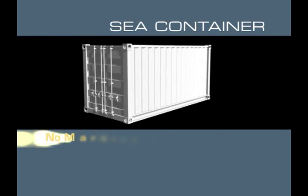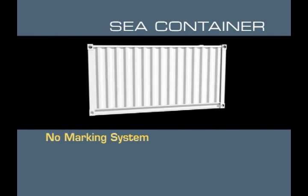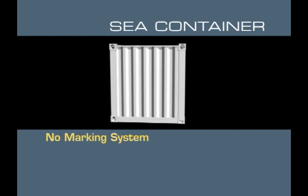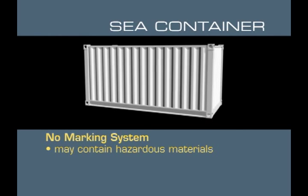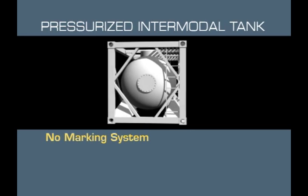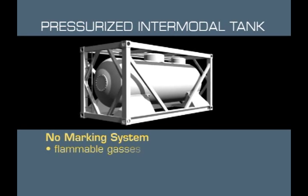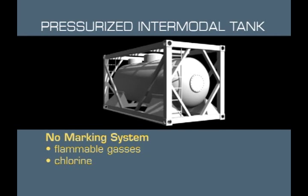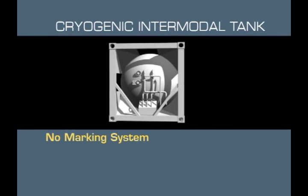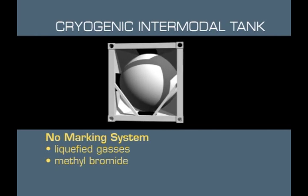Some intermodal containers do not use a marking system. The most common is the C container, in which any number of items can be stored, including hazardous materials. The pressurized intermodal tank is another example of an unmarked container and carries flammable gases such as chlorine. There is also the specialized intermodal unit such as the cryogenic tank, which carries liquefied gases.